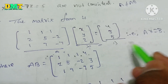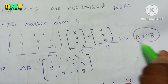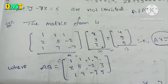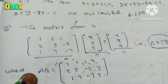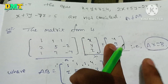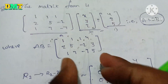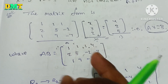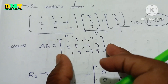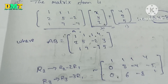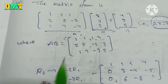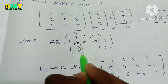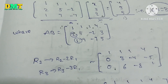The augmented matrix [A|b] is: row 1: 1, 1, 1, 4; row 2: 2, 5, -2, 3; row 3: 1, 7, -1, 5. Now we apply row reduction. We start with R2 minus 2 times R1, and R3 minus R1.